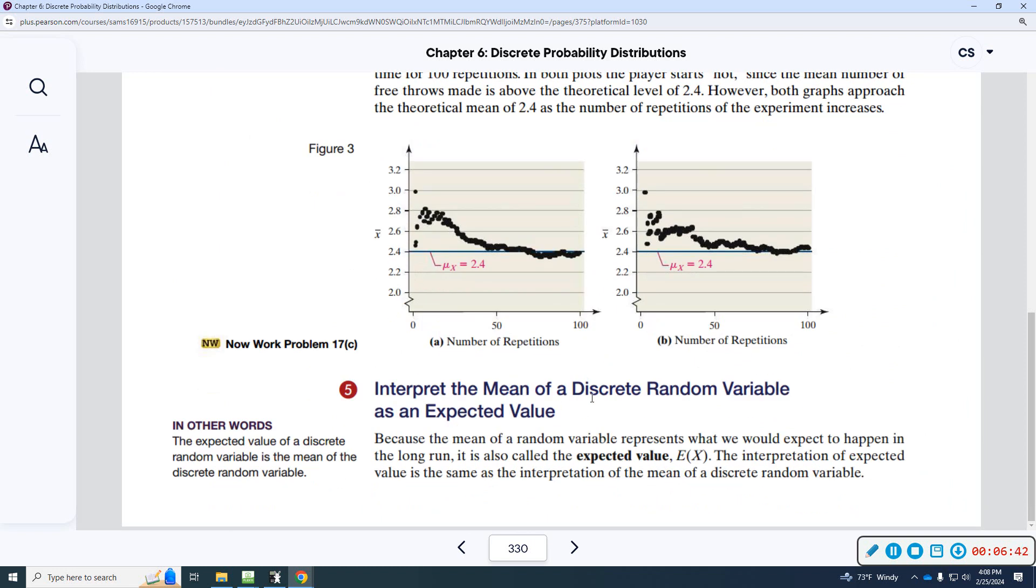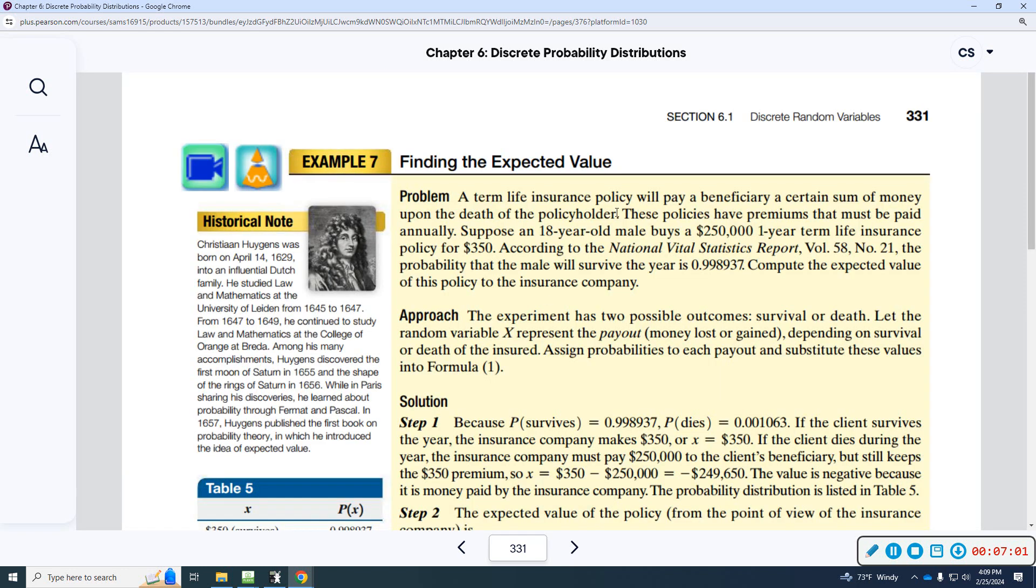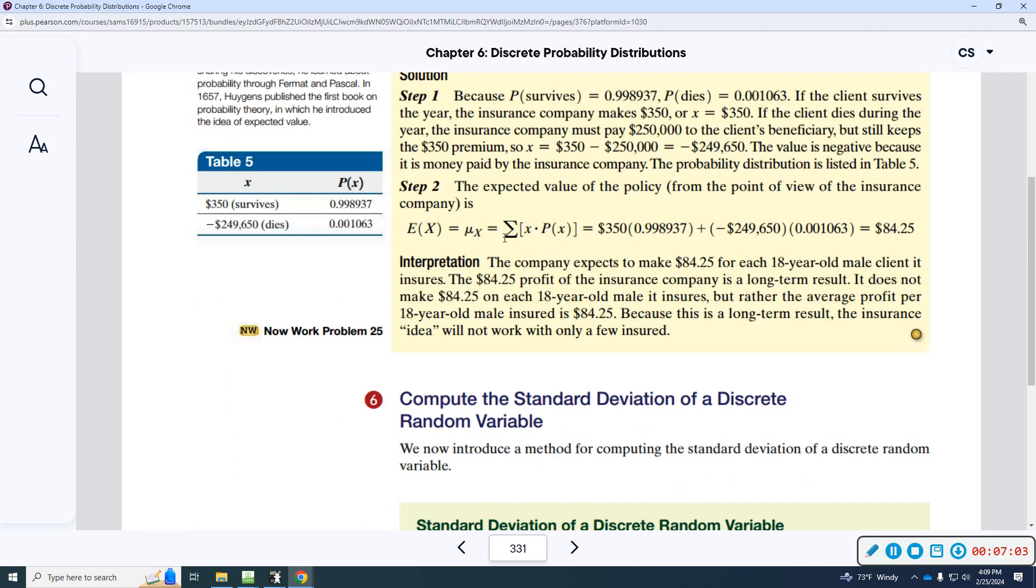Interpret the mean of a discrete random variable as the expected value. Because the mean of a random variable represents what we would expect to happen in the long run, it's also called the expected value. Mean and expected value are the same thing. Just two different words or descriptions of the same. Here's an example. And this is what the formula is for expected value. E of X is expected value. Expected value is the mean. It's the same calculation. There's nothing different.